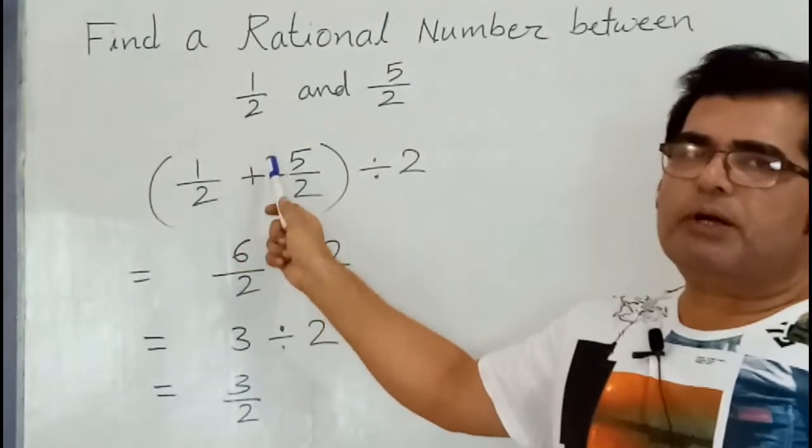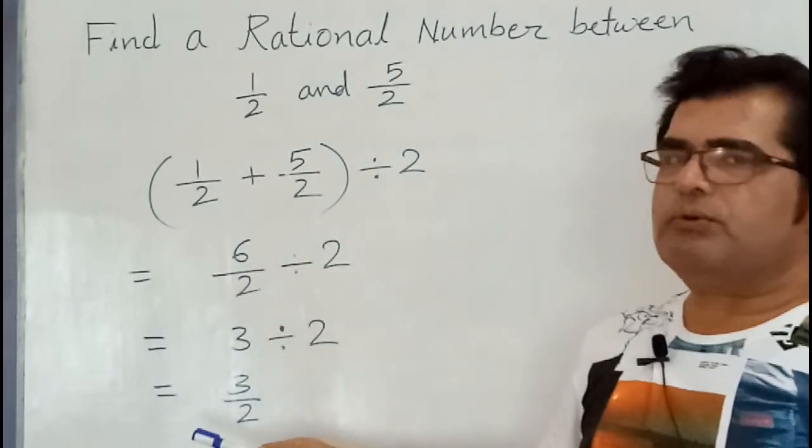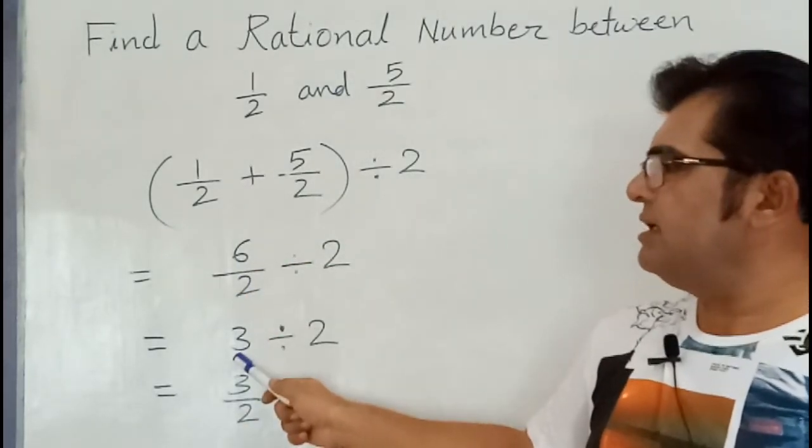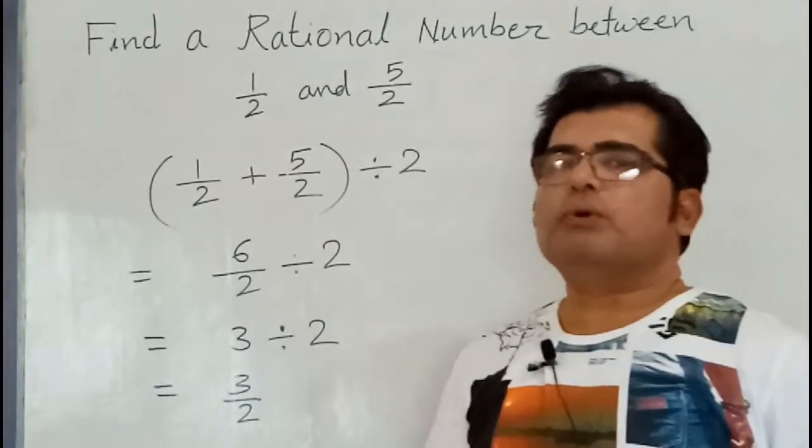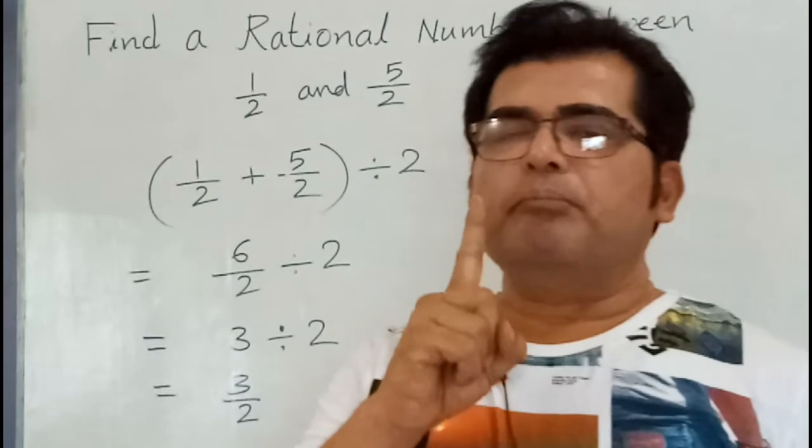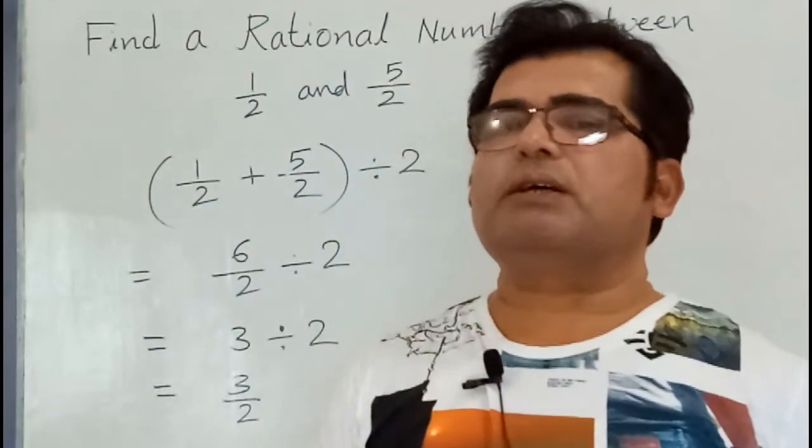So by adding 1 upon 2 and 5 upon 2, we got 6 upon 2. 6 upon 2 is 3. So 3 divided by 2 means 3 upon 2 is a rational number between two given rational numbers.